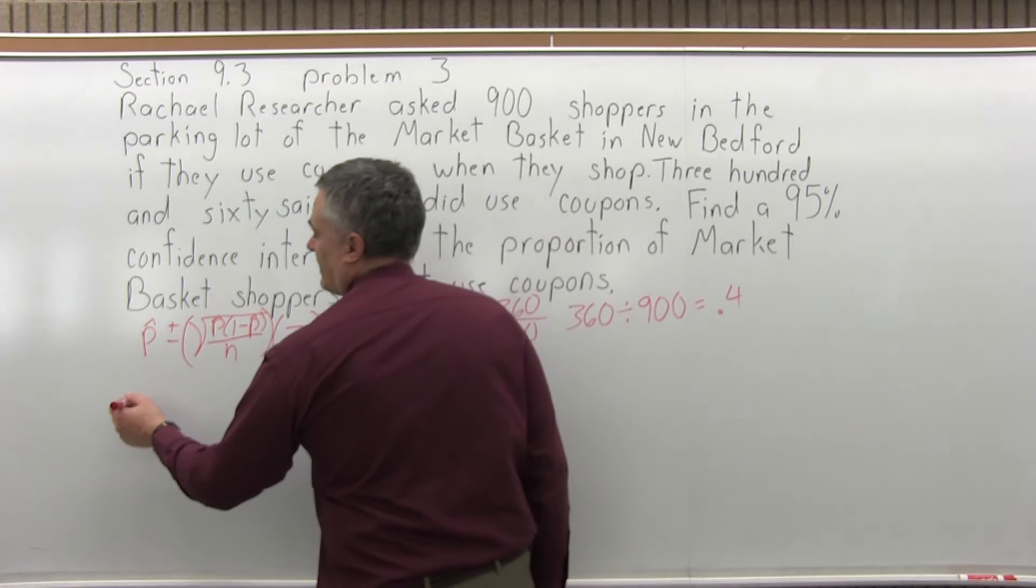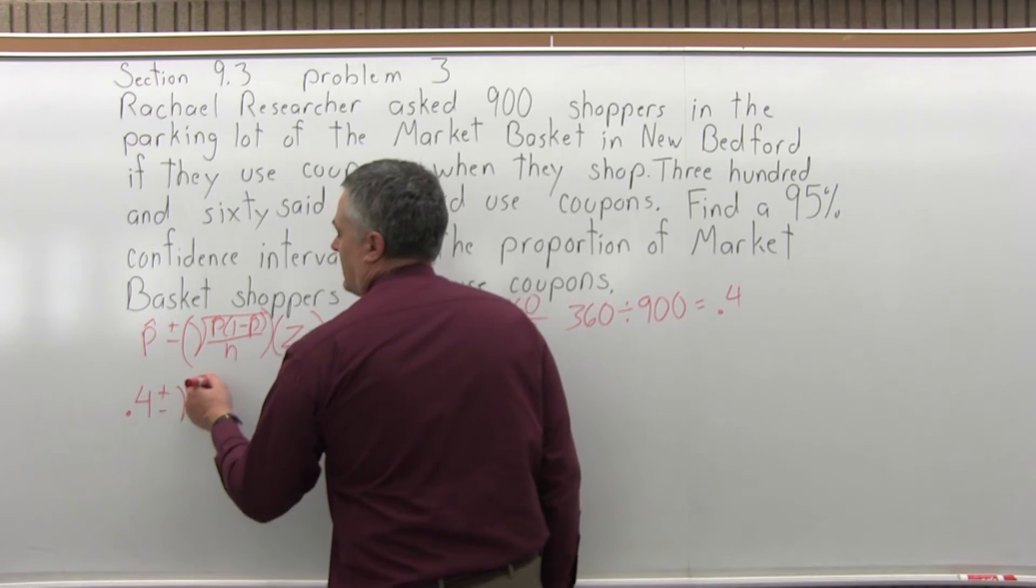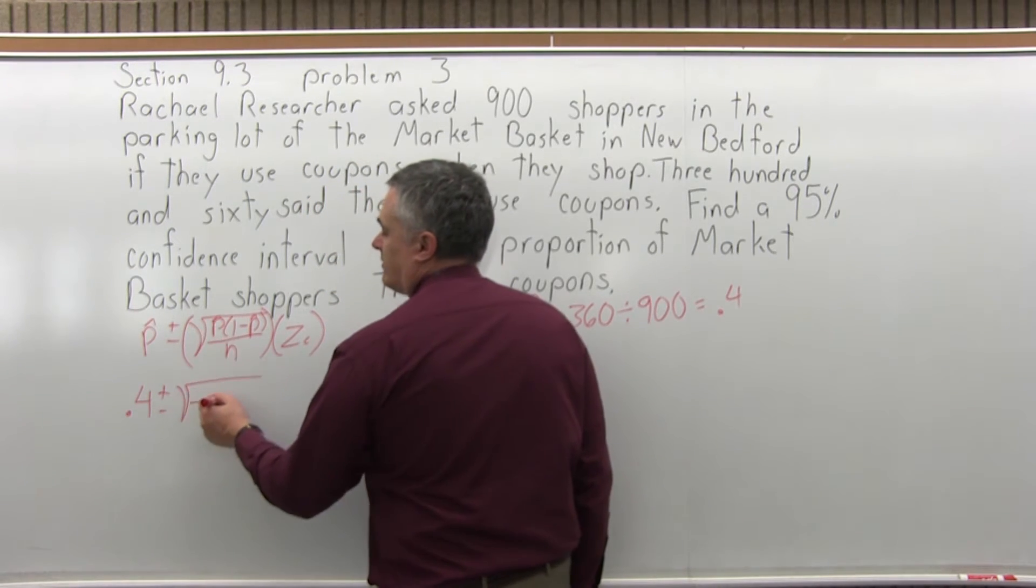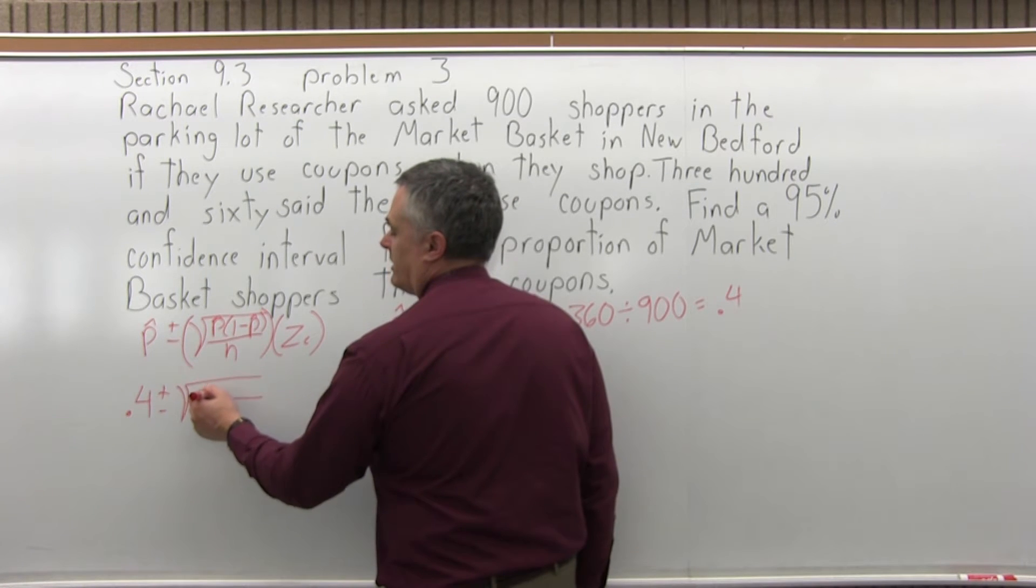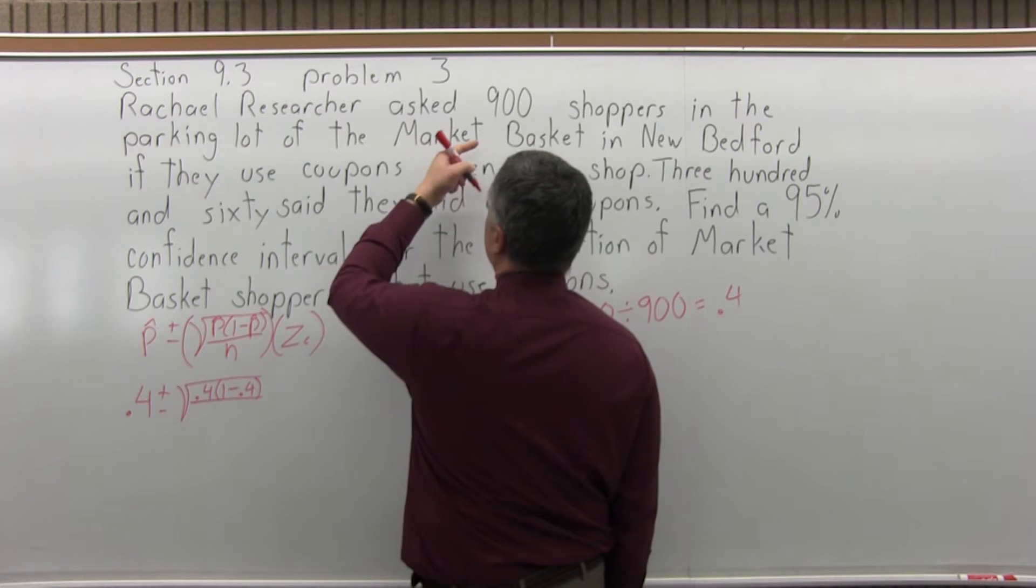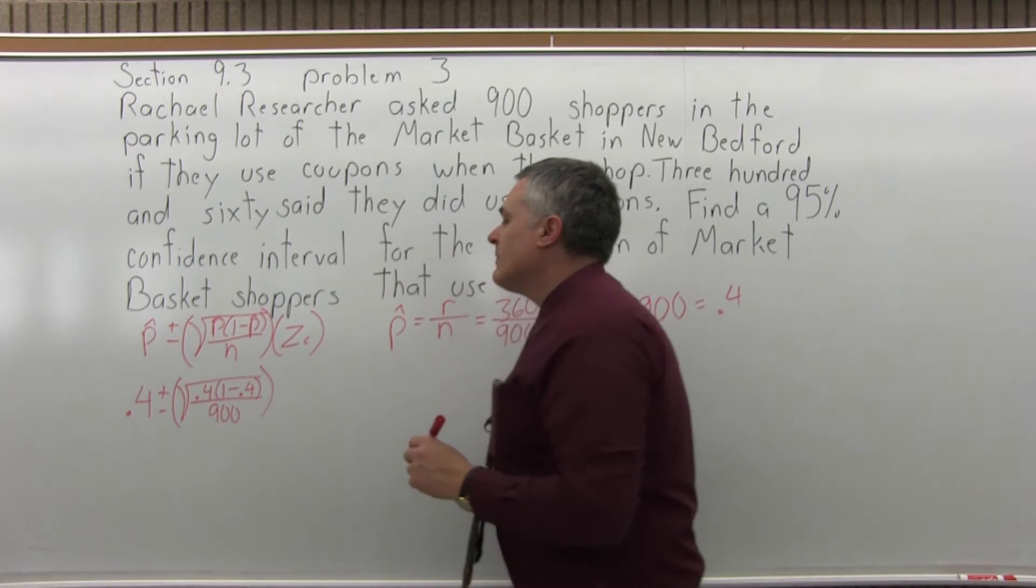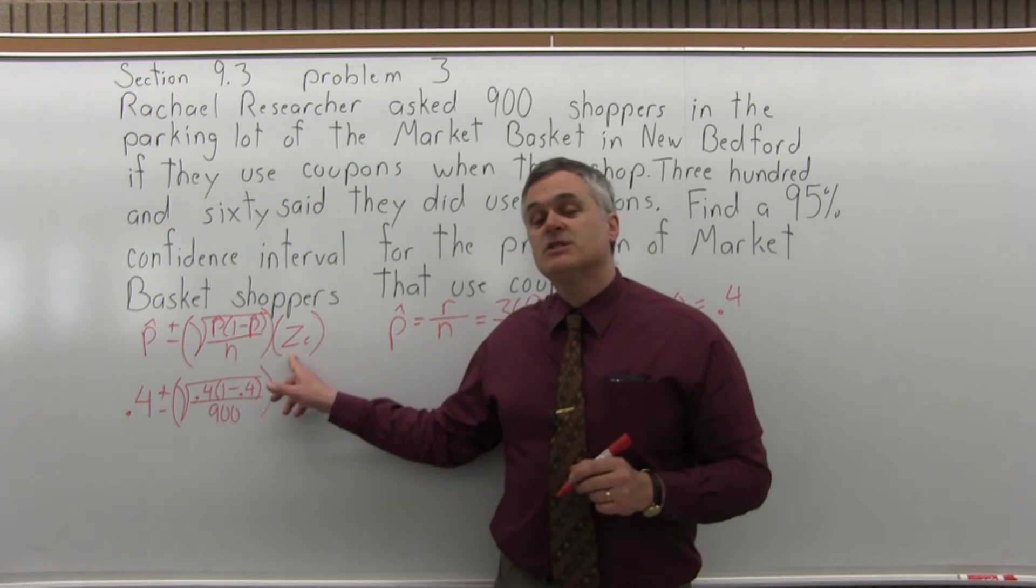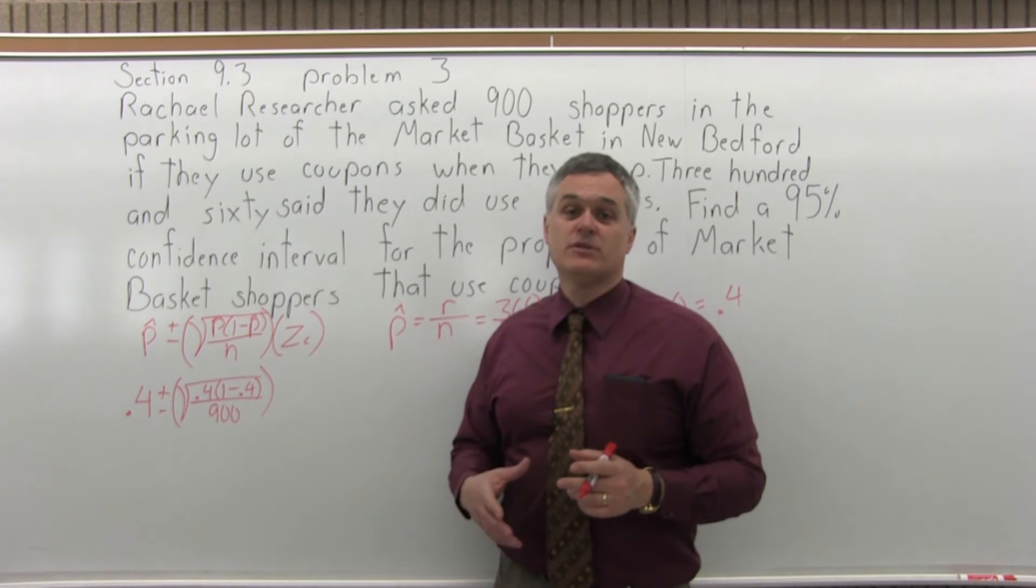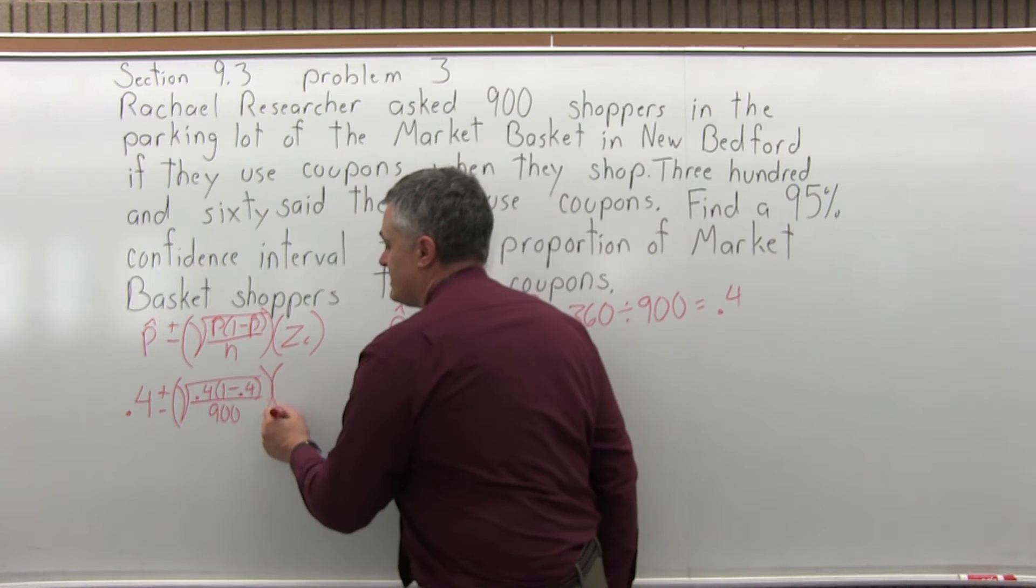In the far left, p hat plus or minus will be 0.4 plus or minus. And now the square root of p hat, 0.4, times 1 minus p hat is 1 minus 0.4, over n, that's the size of our sample. So in this case, 900, the 900 shoppers that were asked if they used coupons. And then z sub c is the confidence coefficient. We have a little chart where for 95%, that's a commonly asked confidence level, the z sub c is 1.96.